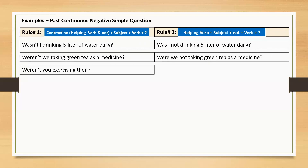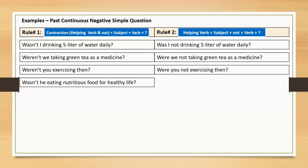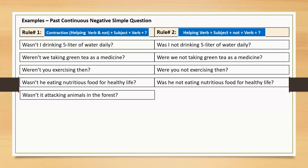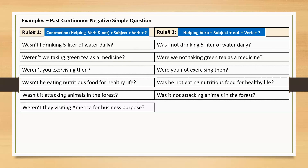Weren't you exercising then? Were you not exercising then? Wasn't he eating nutritious food for a healthy life? Was he not eating nutritious food for a healthy life? Wasn't it attacking animals in the forest?